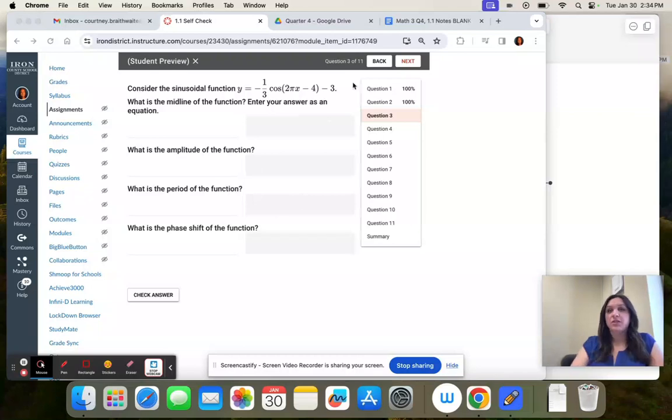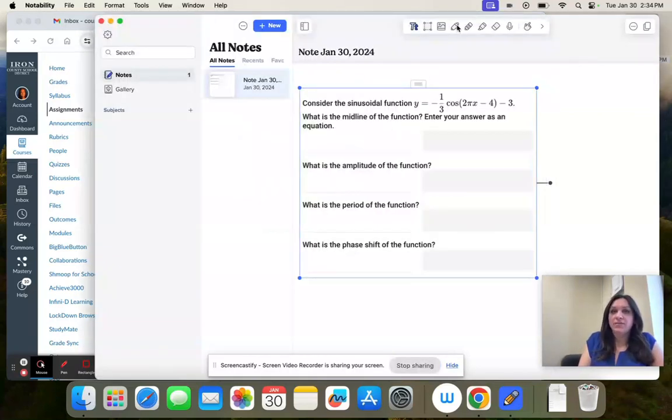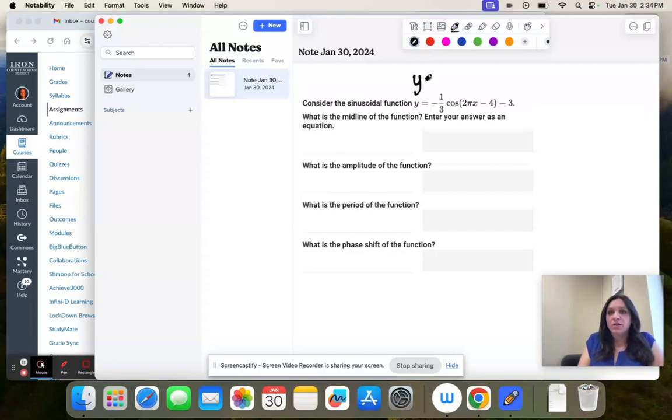So we're still going through everything that we've been doing. I'm going to write in our general form. So it's y equals a cosine of bx minus c plus d.